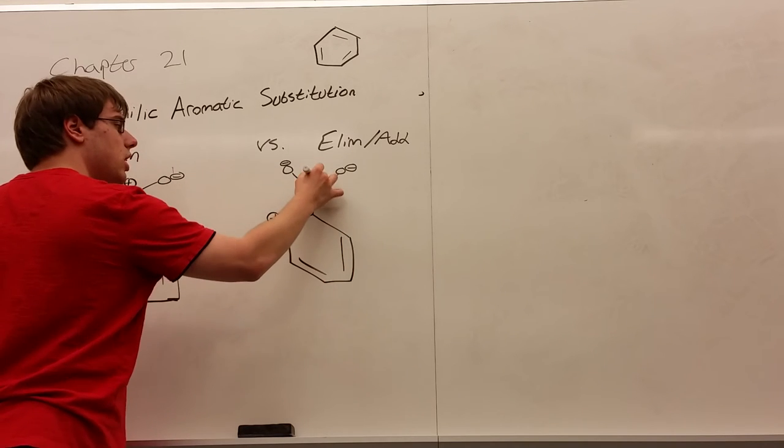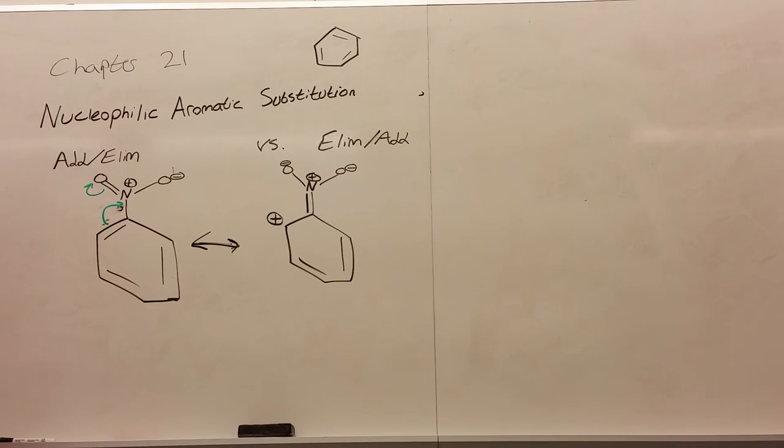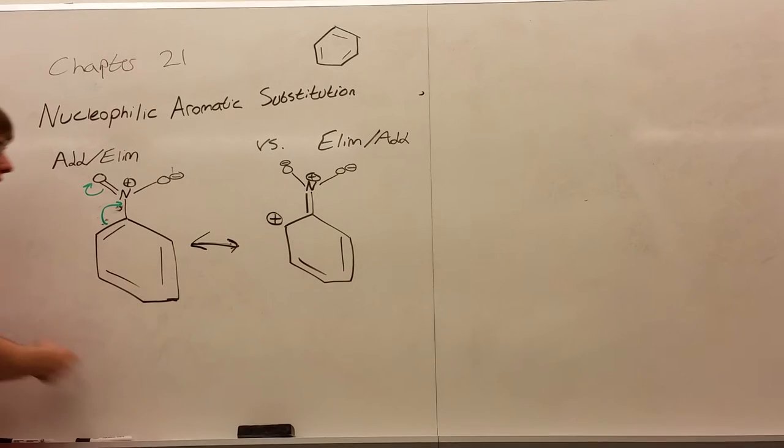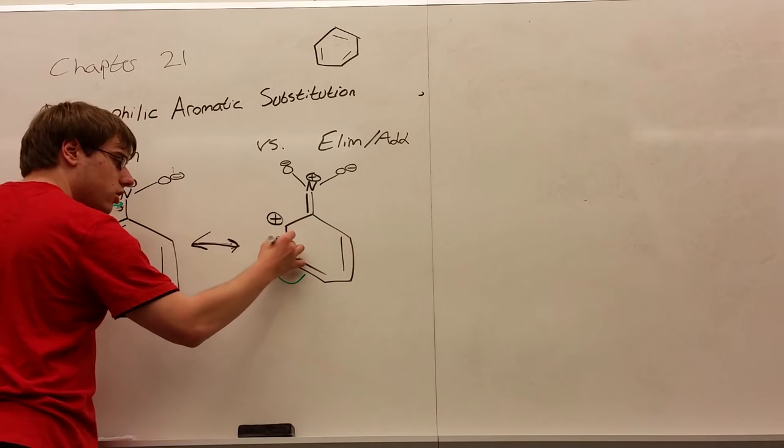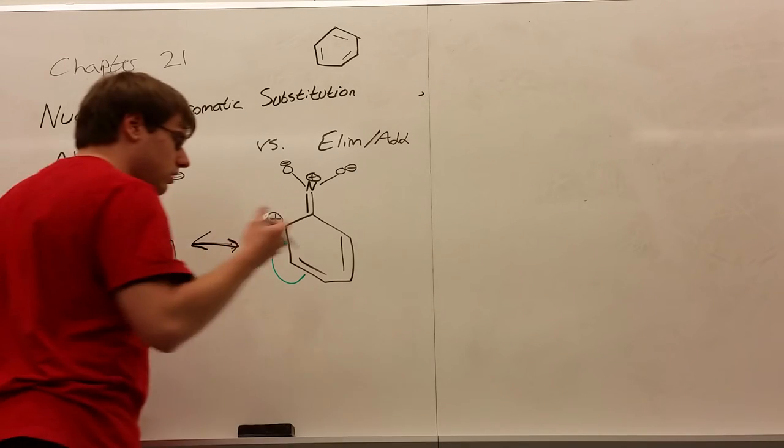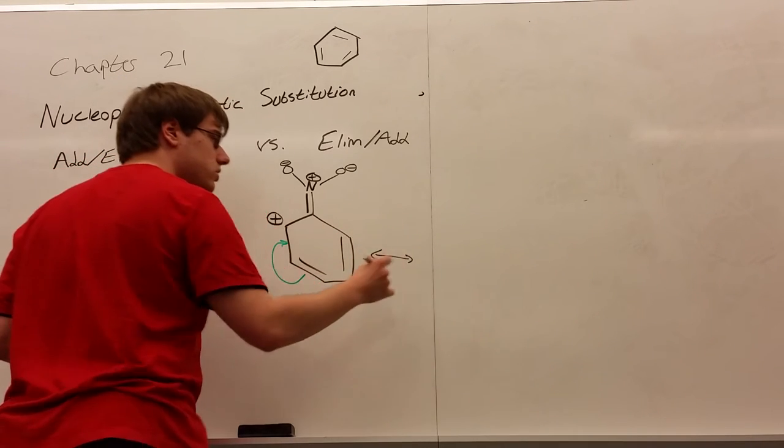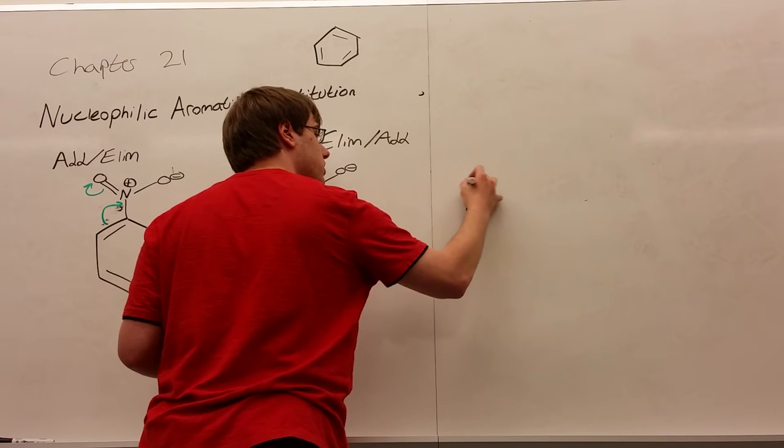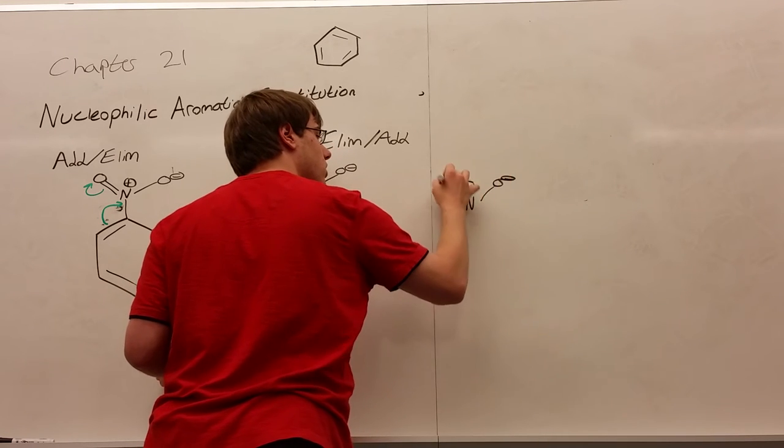There we go. A positive charge on the ortho position. And if I continue resonating through the ring, well, I can get a positive charge in the para position and the other ortho position as well, giving me this resonance structure, N plus, O minus, O minus.